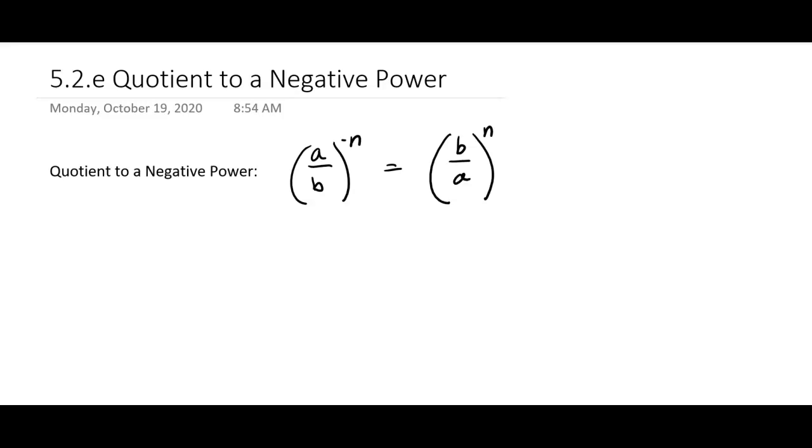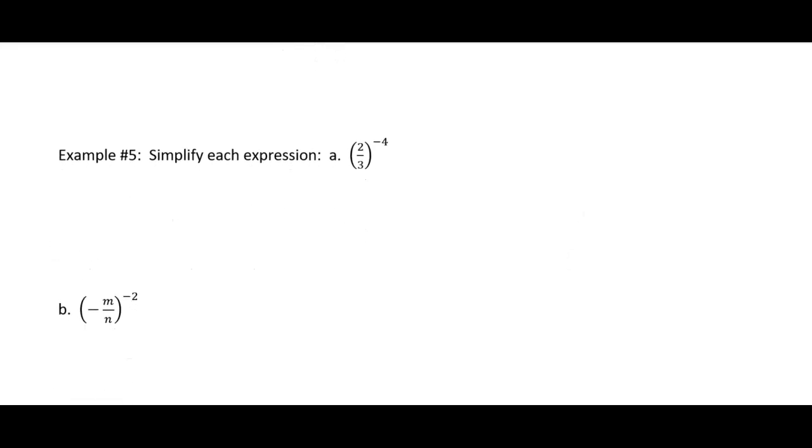A went downtown, b went uptown, you know. That can be a really handy rule to use sometimes. And by the way, a cannot equal zero here, and b cannot equal zero. So that's the rule: if you have a quotient and the outer exponent on it is negative, you can flip it.